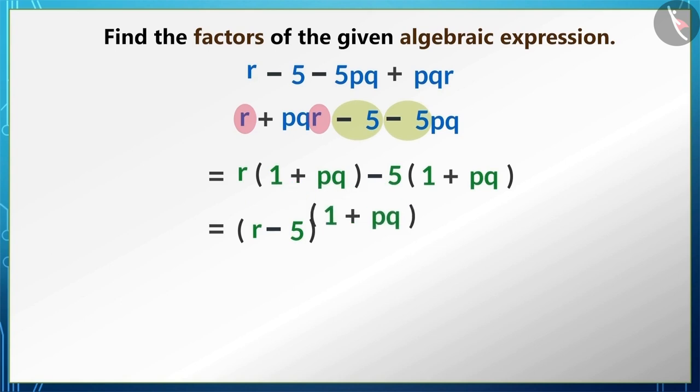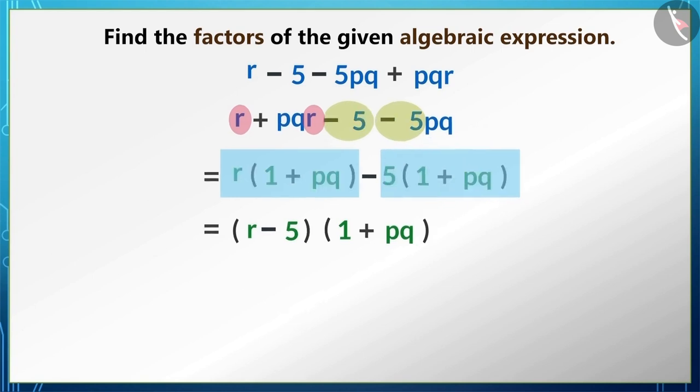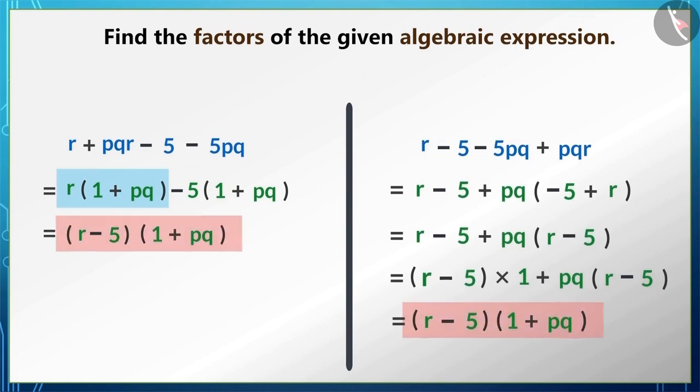Here we wrote r + pqr as r multiplied by (1 + pq), because we can also write r as 1 multiplied by r. If we multiply both of these, then we get r + pqr. Similarly, we can also write -5 - 5pq as -5 multiplied by (1 + pq). We can see that here we are getting the same factors.